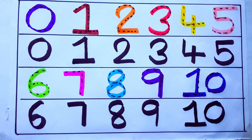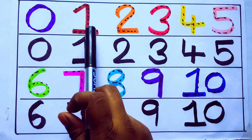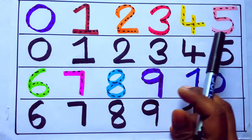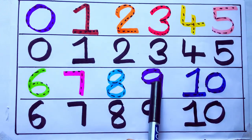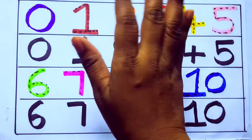One second learning numbers: 0, 1, 2, 3, 4, 5, 6, 7, 8, 9, 10. Okay. Bye kids.